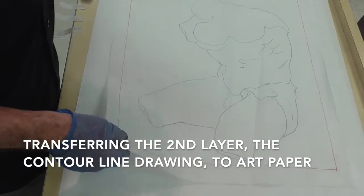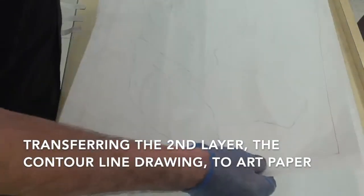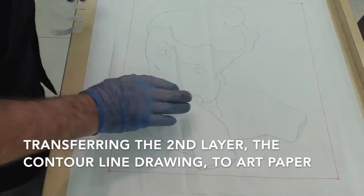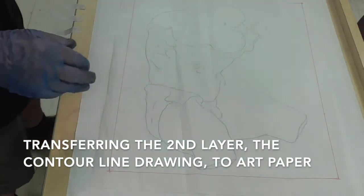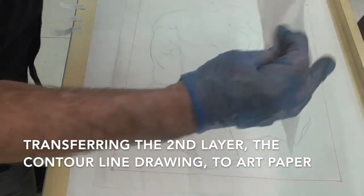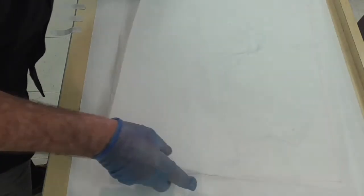And how I'm going to do this is I'm going to turn it upside down. This is the contour line drawing. I'm going to take another piece of tracing paper, put it directly on top. This is a little bit smaller,